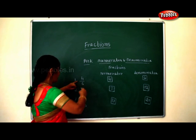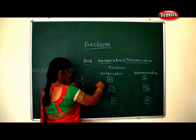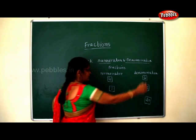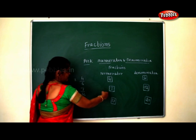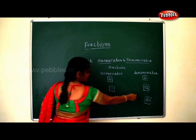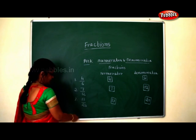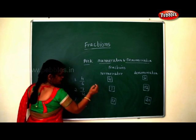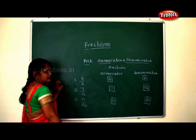So to review: in 4 by 6, 4 is the numerator and 6 is the denominator. In 7 by 12, 7 is the numerator and 12 is the denominator. In 13 by 20, 13 is the numerator and 20 is the denominator.